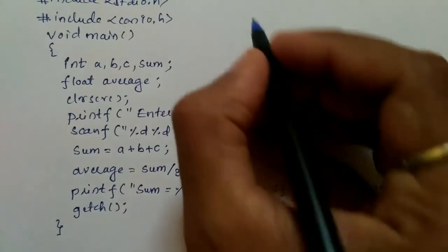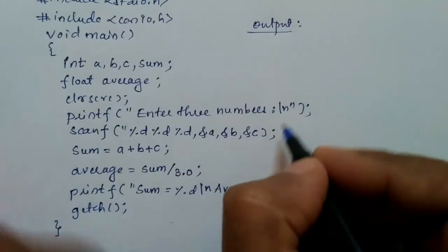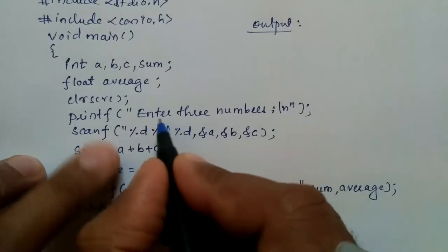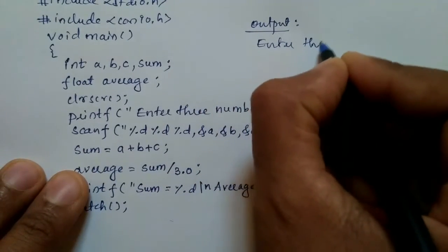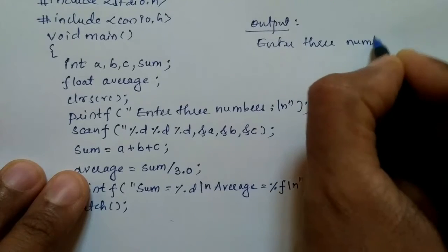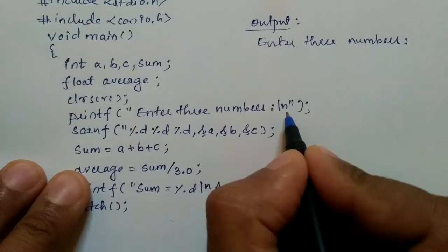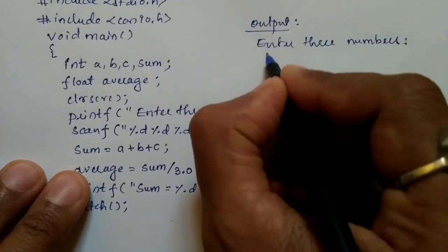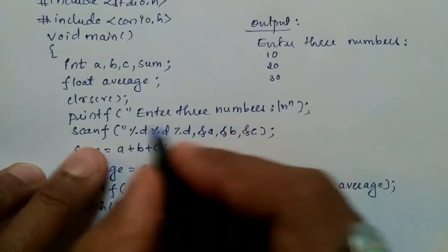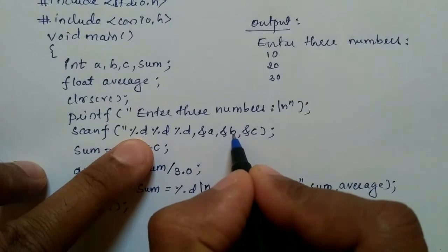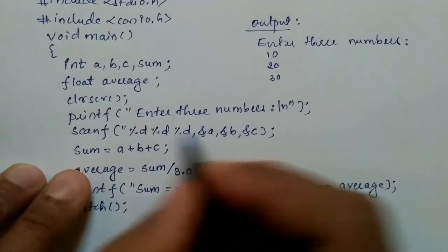Let us write here output. When we compile and run this program it will ask the user to enter three numbers, and cursor will come down just because of \n. So what I am going to do here is I am going to enter 10, 20, and 30. So here 10 is assigned to a, 20 is assigned to b, and 30 is assigned to c.